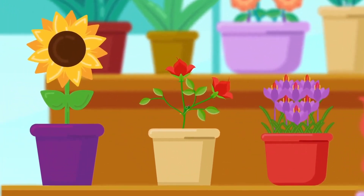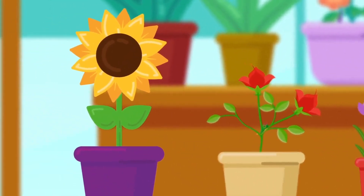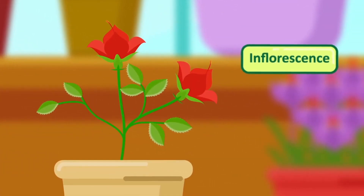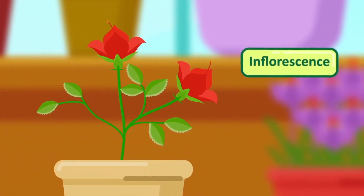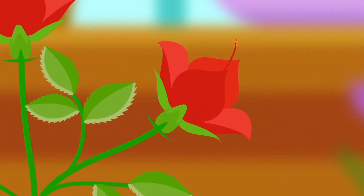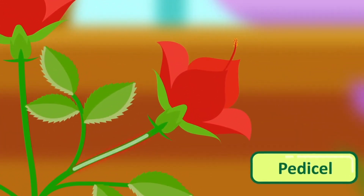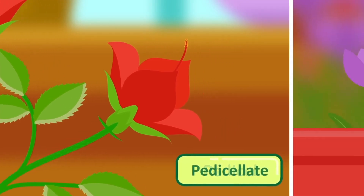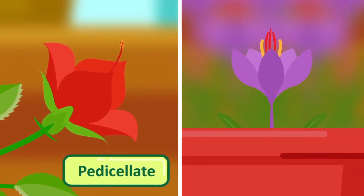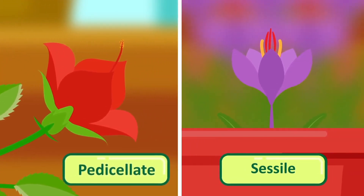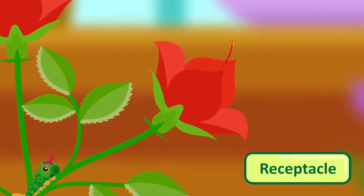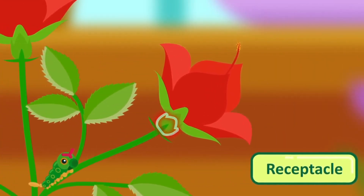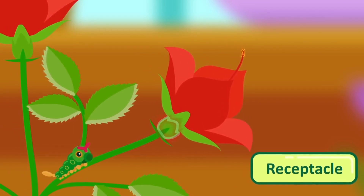The general parts of a flower: flowers may occur singly on plants or in definite clusters called inflorescences. A complete flower consists of the following parts. The pedicel is a flower stalk; some flowers have no pedicels and are called sessile flowers. The receptacle is the enlarged end of the flower stalk on which the other parts of the flower are borne.